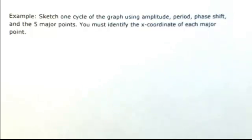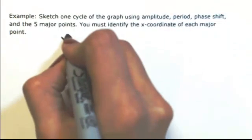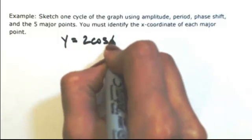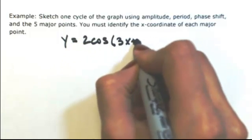Sketch one cycle of the graph using amplitude, period, phase shift, and the five major points. You must identify the x-coordinate of each major point. The function is y equals 2 cosine of 3x plus pi.